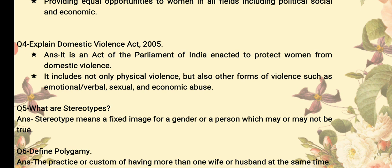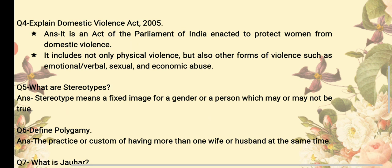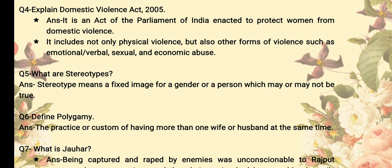Polygamy is a custom where a person has more than one husband or more than one wife at the same time. That is the definition and example of polygamy.